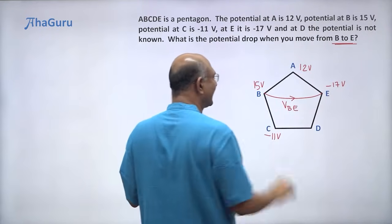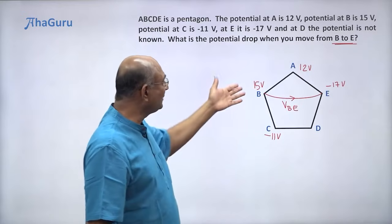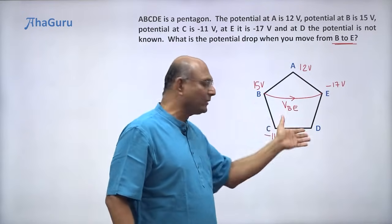I don't have to move like this. I can move like that, right? What is the potential drop from B to E? I don't need C. I don't need A. I don't need D.